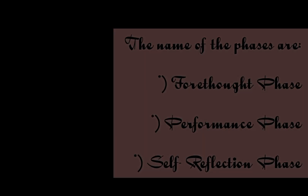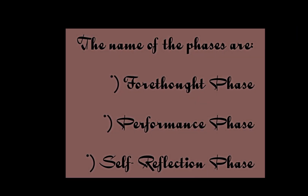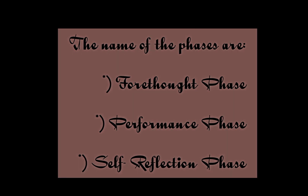His model comprises three phases. The self-regulated learning process is divided into three phases, each with separate parts. The names of the phases are: Forethought Phase, Performance Phase, and Self-Reflection Phase.